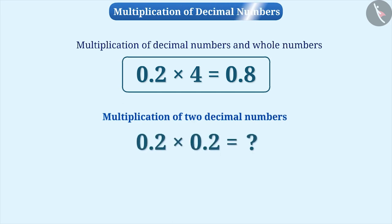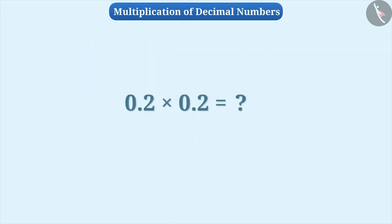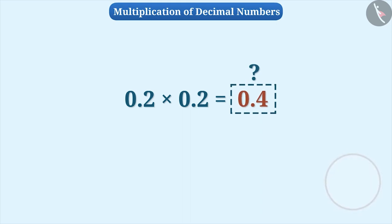Now, we are going to learn multiplication of two decimal numbers. Suppose we need to find the value of 0.2 multiplied by 0.2. Will the answer be 0.4? Think for a while.